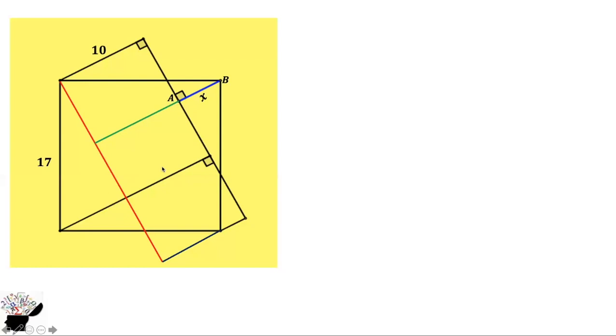Now we know this is 90 degrees, and this is the hypotenuse. Using Pythagoras, we can find the whole length of this one.